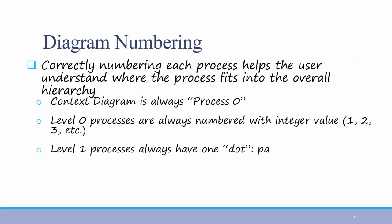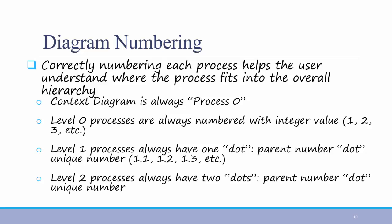On the level 1 diagram, your processes always have one dot. For example, 1.1, 1.2, 1.3. Level 2 processes have two dots, and so forth.